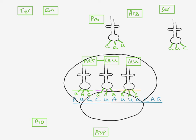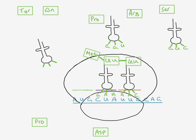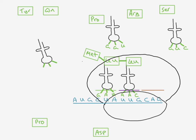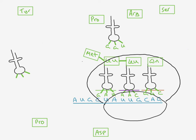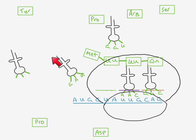Another transfer RNA molecule collects an amino acid and brings it to the ribosome, binding at the third attachment site. At the same time, the first transfer RNA molecule on the other side detaches and leaves the ribosome — this site is called the E site, the exit site. The departing tRNA is now free to go back into the cytoplasm, collect the same amino acid again, and return to the ribosome as needed. We now have three amino acids joined together, and the ribosome moves along the messenger RNA again to continue the process.